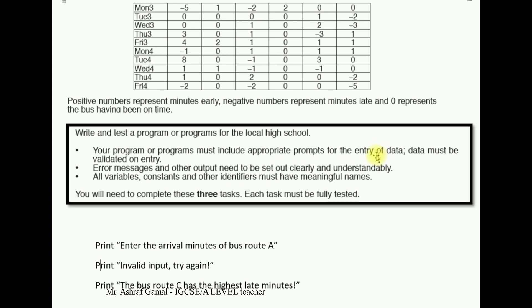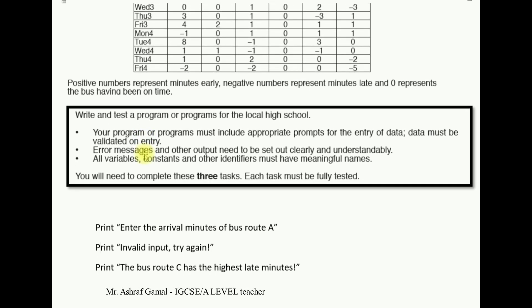Also, the data must be validated on entry. For example, if the valid values are from 0 to 10, then values below 0 or above 10 should be rejected. Output messages should be clear, for example 'Bus route C has the highest late minutes.' Finally, all variables, constants, and other identifiers in your program must have meaningful names. Do not use variable names like X and Y, as this would be ambiguous for you and for the examiner.